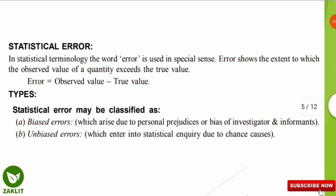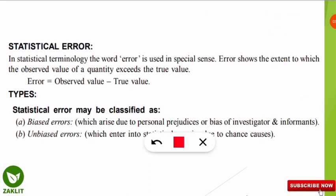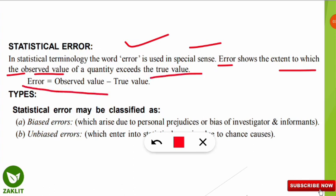In statistical terminology, the word 'error' is used in a special sense. Error shows the extent to which the observed value of a quantity exceeds the true value. So: Error = Observed Value − True Value. Now let's look at the types of error — the two basic classifications are biased error and unbiased error.